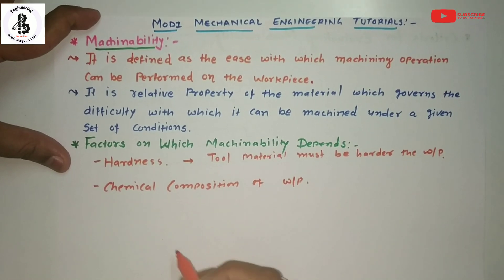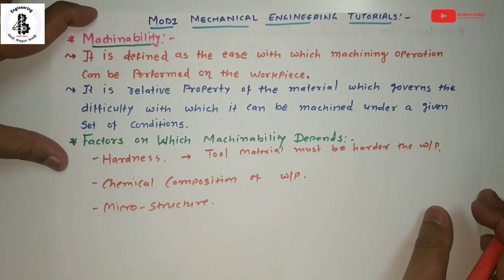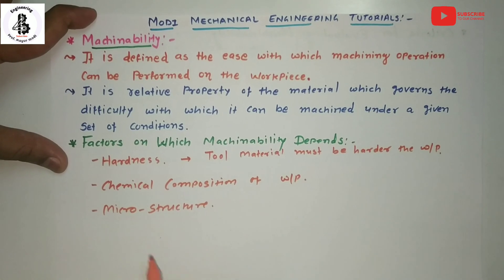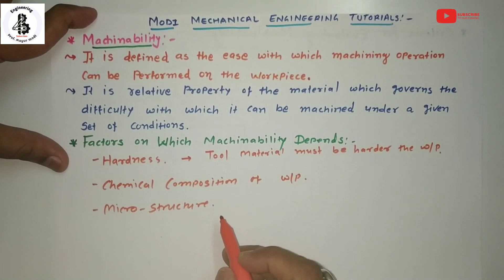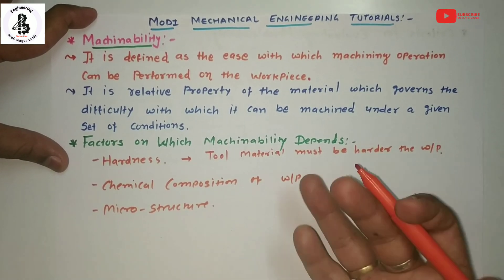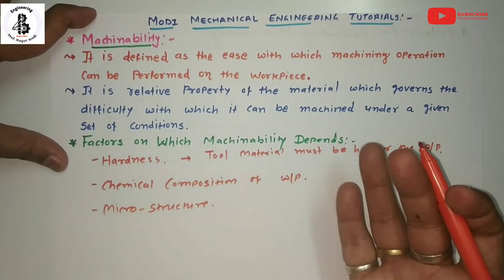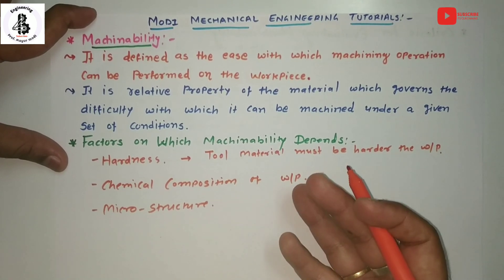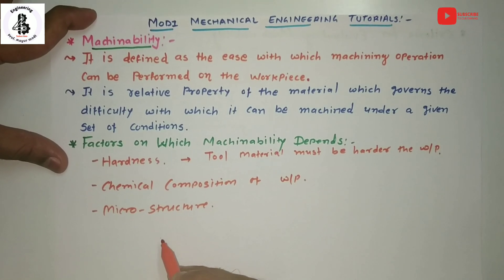The third factor is microstructure. From a materials engineering or metallurgy perspective, the microstructure — whether it is the surface or core structure — plays an important role. Machinability also depends on whether the material is brittle or ductile; ductile materials are generally easier to machine, while brittle materials present more difficulties.